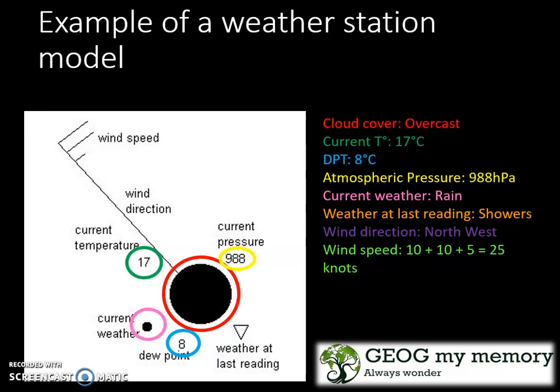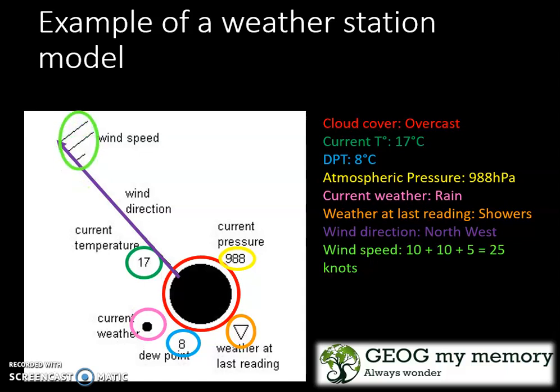Your current weather is rain. The weather at the last reading is showers. Your wind direction is north-west. And your wind speed is 25 knots, because one long line is equal to 10 knots and one short line is equal to 5 knots.